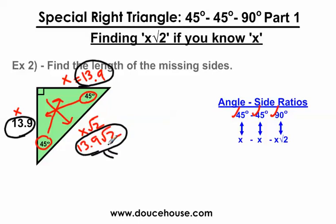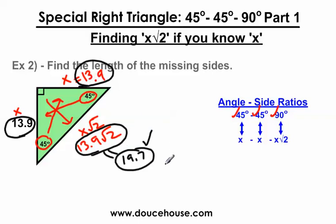If you're not quite sure what 13.9 square root 2 means, let me plug this into my calculator — 13.9 times the square root of 2 — and I get 19.7. This is actually 19.6575 and it just goes on forever, but I'm rounding to the nearest tenth. Keep in mind, this side is the hypotenuse and should always be the longest side. Since 19.7 is definitely bigger than 13.9, this checks out. Your teacher is probably going to be okay with you leaving this as 13.9 square root 2.